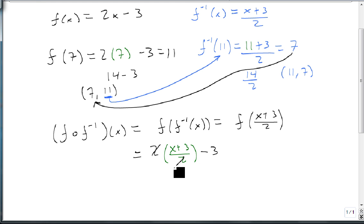Notice that the 2's divide out, which just leaves us with x plus 3 minus 3, and plus 3 minus 3 adds to 0, and we're left with an x by itself.